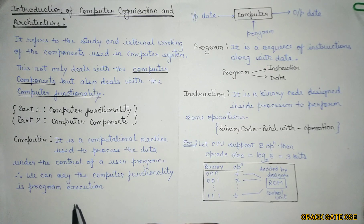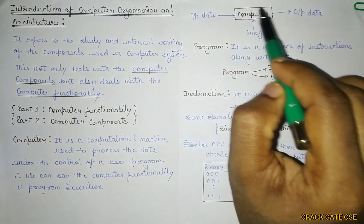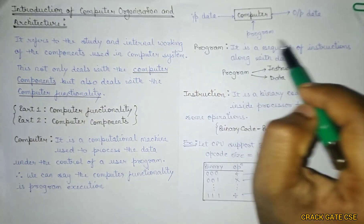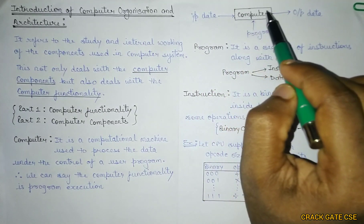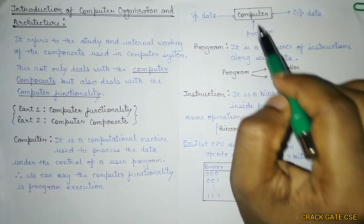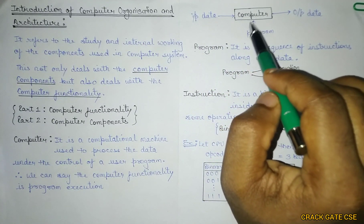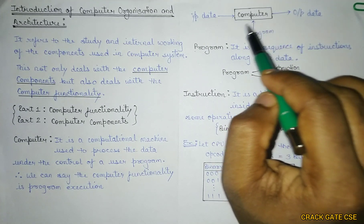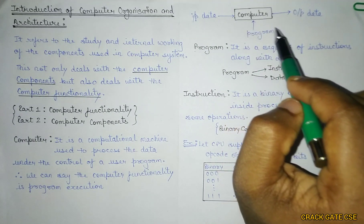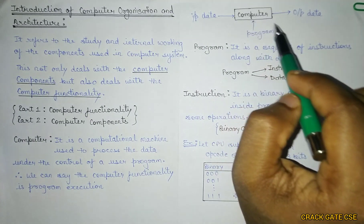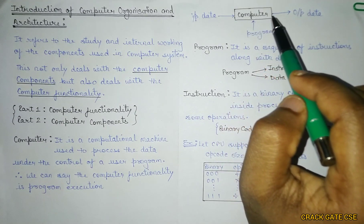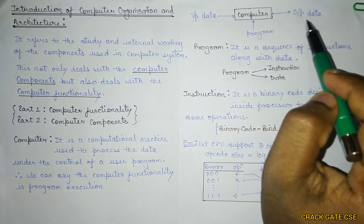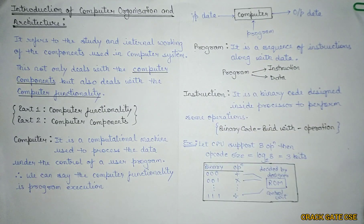The block diagram of a computer consists of: input given as data, monitored by a program (which you can also refer to as software). Using that software the computer processes the data, and as an output it gives you the output data. This is the general functionality of a computer.